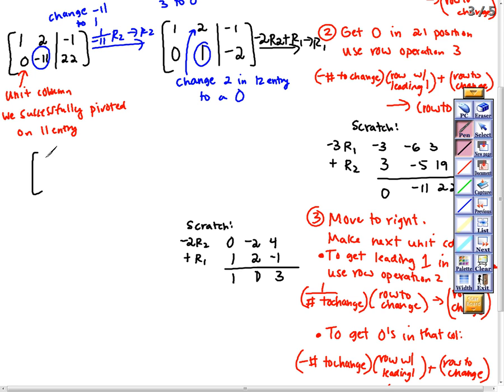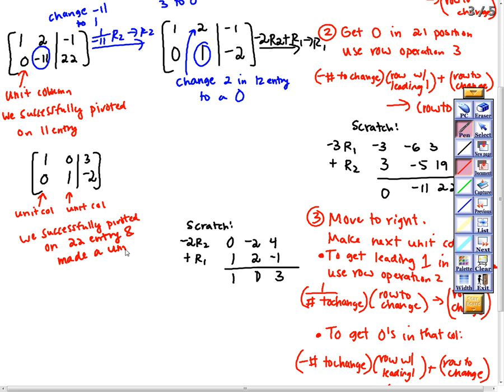So my final answer, first line is 1, 0, 3. I did not change row 2, so I have 0, 1, negative 2. This guy is a unit column, and so is this guy. We successfully pivoted on the 2,2 entry this time because that's where the leading 1 is. And we made a unit column.